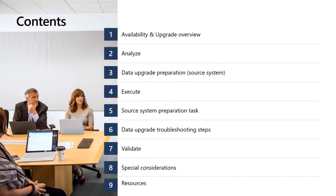In terms of content, I'll be taking you through the first half of the slides, starting with upgrade availability and overview. I will cover the analysis phase — how to arrive at code and data upgrade estimation and come up with a project plan. I'll also share key data upgrade preparations at the source system due to deprecations between Dynamics 365 and AX 2012. Then I will hand over to Ankur to cover the execute phase, code and data upgrade activities, source system preparation, troubleshooting, UAT validation, cutover, and go-live.